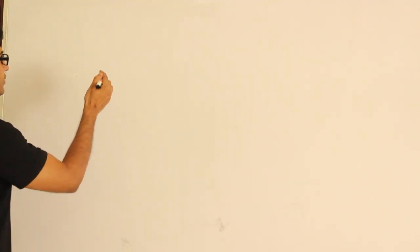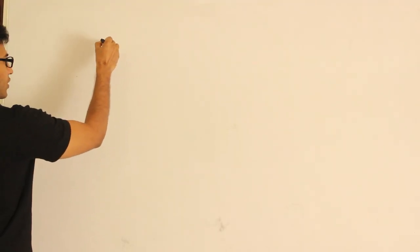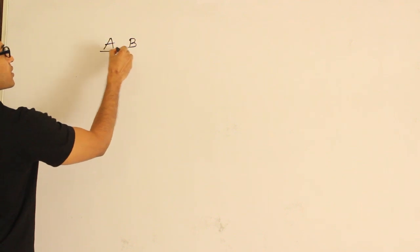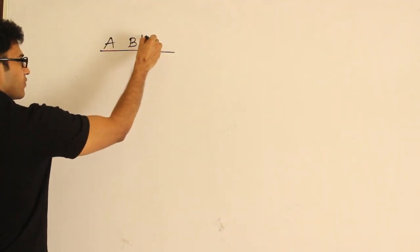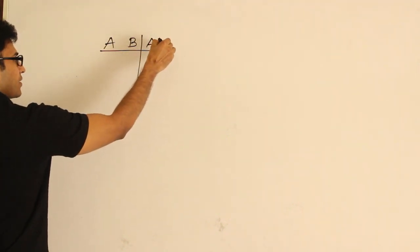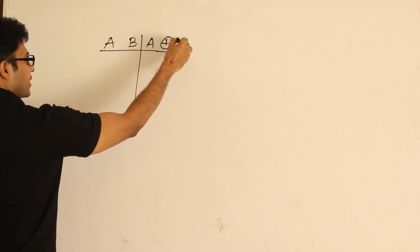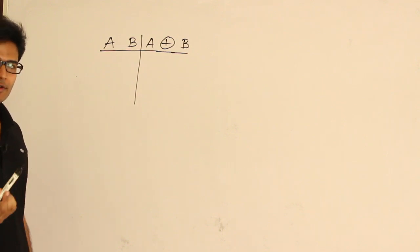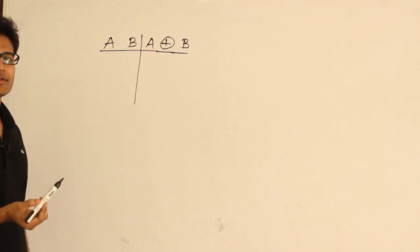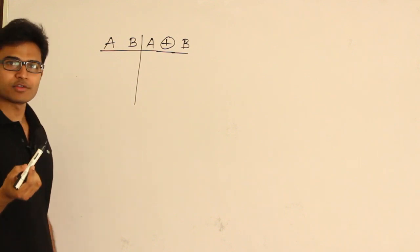Now let's see Exclusive OR. Exclusive OR is also called modulo-2 sum. Modulo-2 sum means if I add two numbers and divide by 2, the remainder I get is the modulo-2 sum. So Exclusive OR acts as modulo-2 sum.